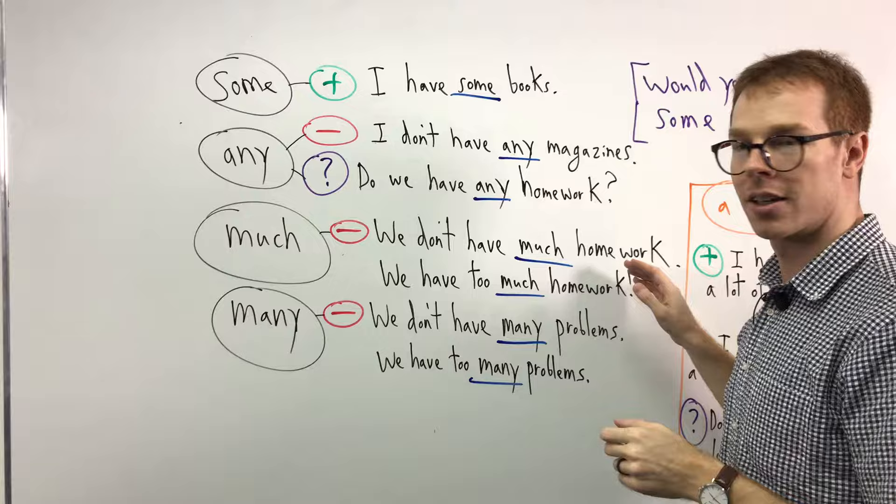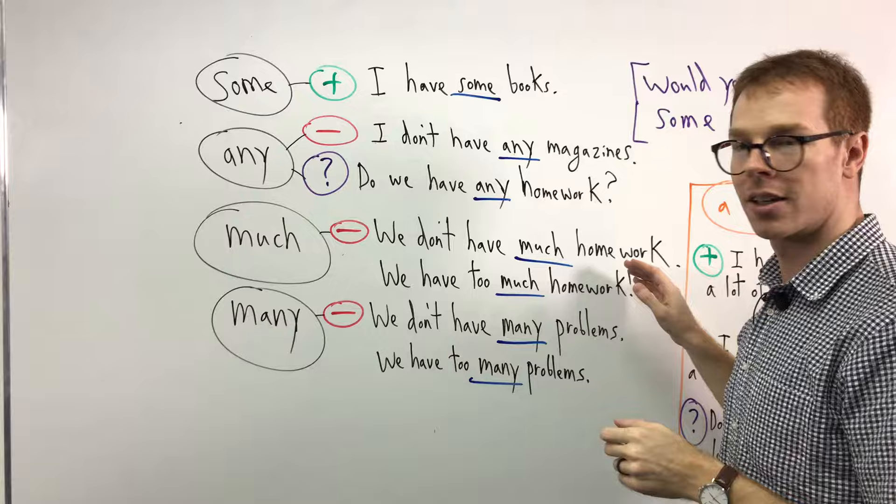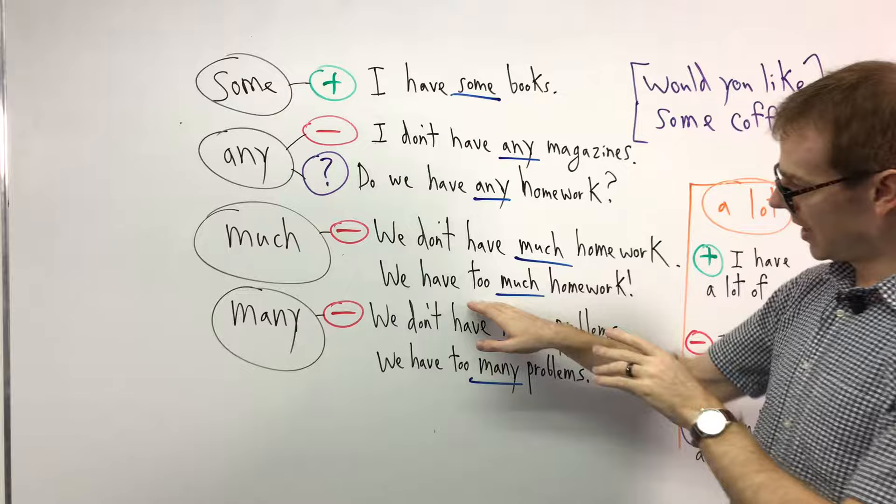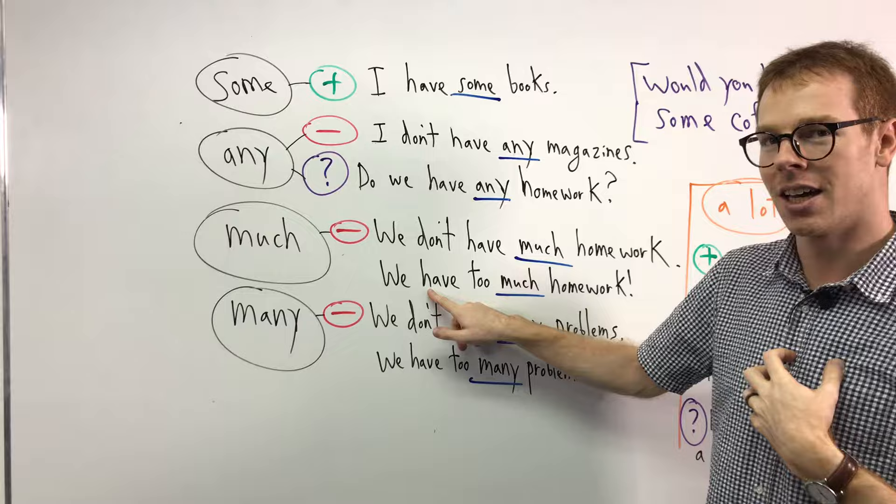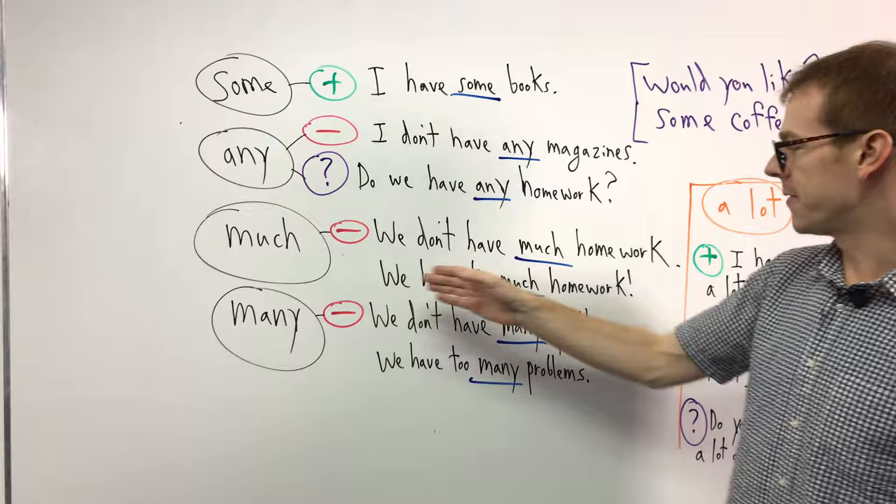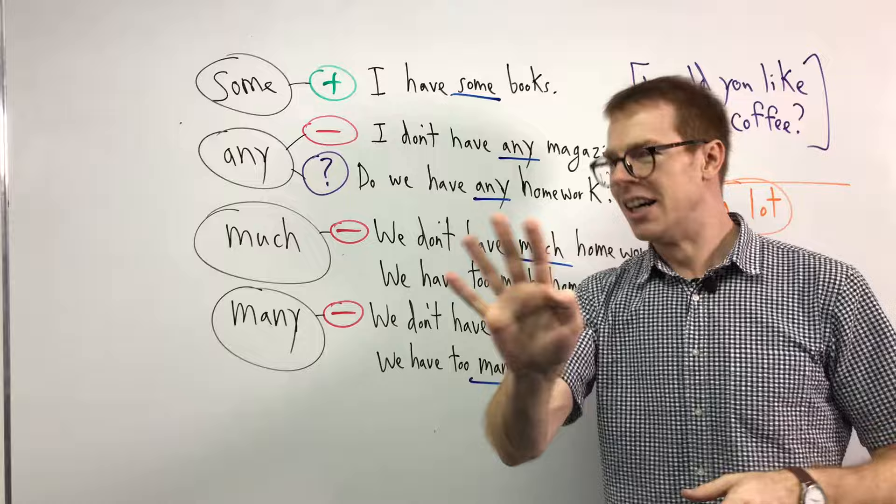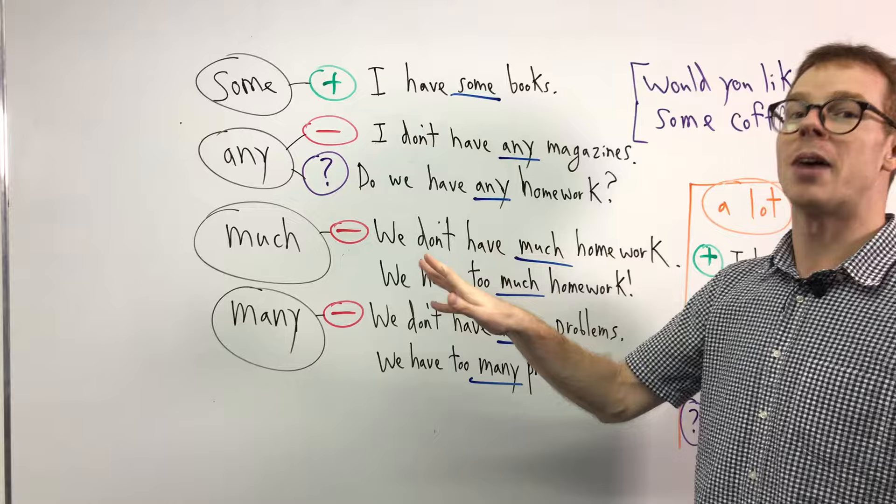We don't have much homework. Or you could say, for if it's not negative, we still use the positive 'we have', but it has a negative feeling, negative meaning. If we say 'too much', that means it's more than I think is good. We have too much homework. Our teacher gave us four pieces of homework. I think that's too much. I have to finish my homework by Thursday. Four pieces, too much. We can use it like that as well.